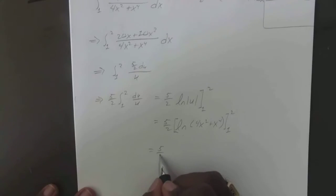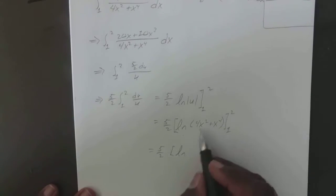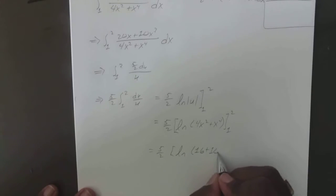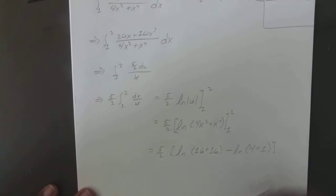So we go ahead and use the fundamental theorem. 5 over 2 times the natural log of 2 squared, so that gives you 4, so you have 16 plus 2 to the 4th is 16, minus the natural log of 1 squared is 1, so you have 4 plus 1.